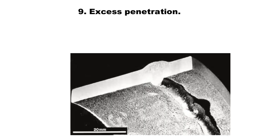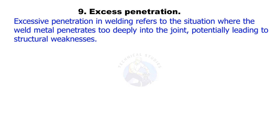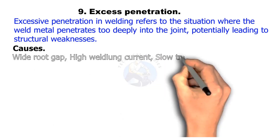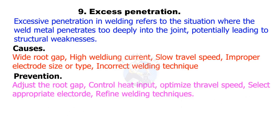Excessive penetration in welding refers to the situation where the weld metal penetrates too deeply into the joint, potentially leading to structural weaknesses. Causes include a wide root gap, high welding current, slow travel speed, improper electrode size or type, and incorrect welding technique. Prevention: adjust the root gap, control heat input, optimize travel speed, select an appropriate electrode, and refine welding techniques.